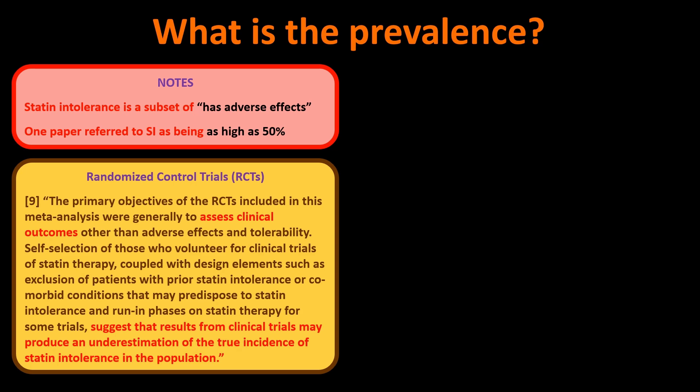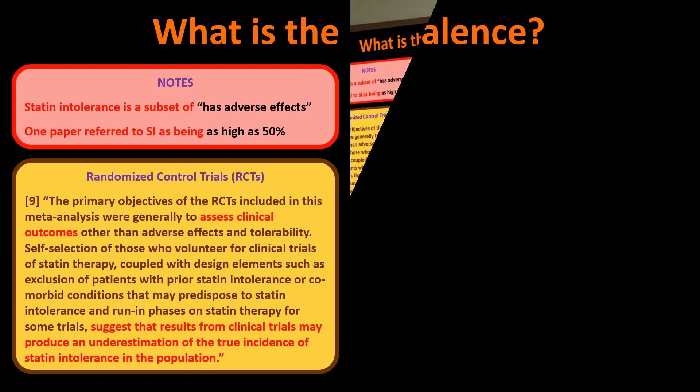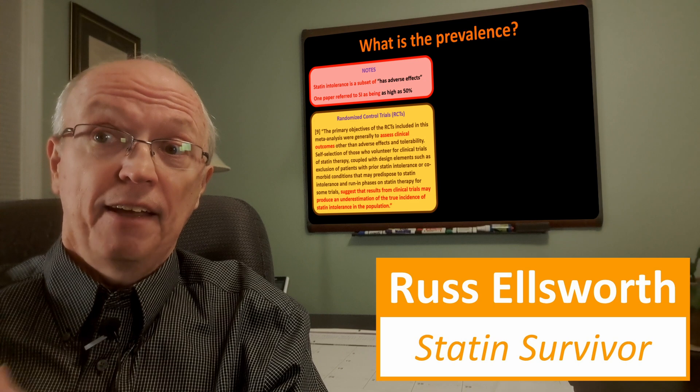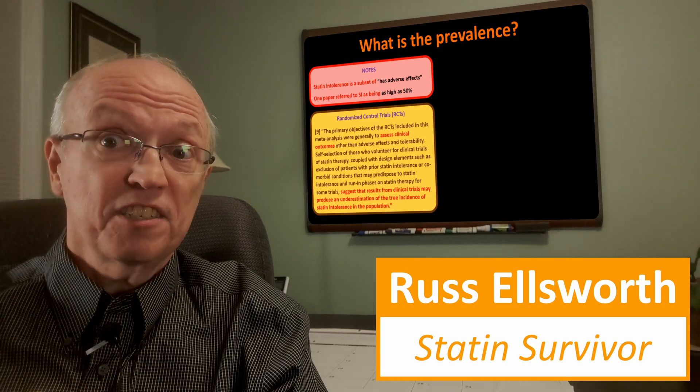There are reasons RCTs underestimate statin intolerance: self-selection of volunteers — if you know you're statin intolerant, you won't volunteer or will drop out. People with prior statin intolerance or conditions making them statin intolerant are excluded. There are also run-in phases where people take the drug and then are assessed before being enrolled. All these things suggest results from clinical trials produce an underestimation of the true incidence of statin intolerance. They then turn to observational or cohort studies.